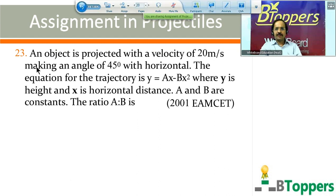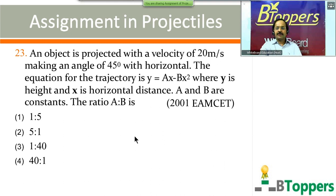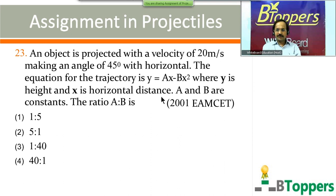Question number 23: an object is projected with a velocity of 20 m/s making an angle of 45 degrees with the horizontal. The equation for the trajectory is y = ax − bx², where y is the height and x is the horizontal distance, and a, b are constants. The ratio a to b is — come on, try the question. This question was originally given in the 2001 MSET engineering entrance exam.